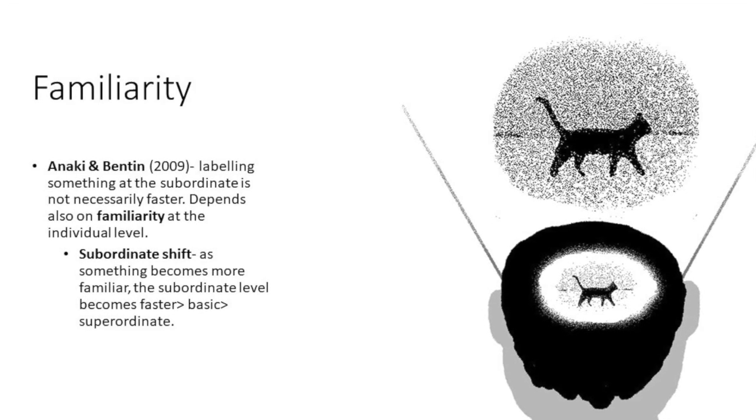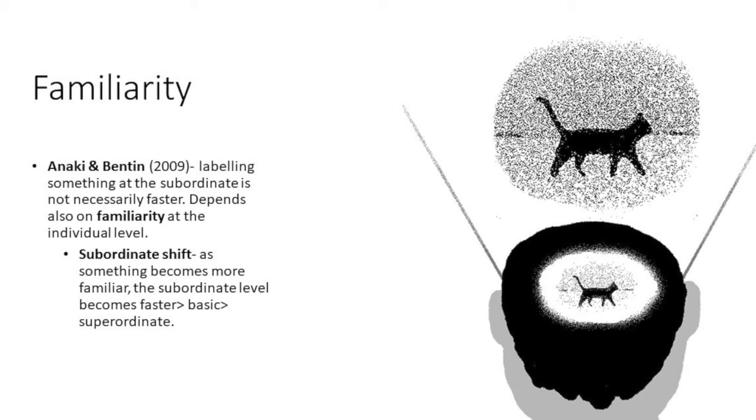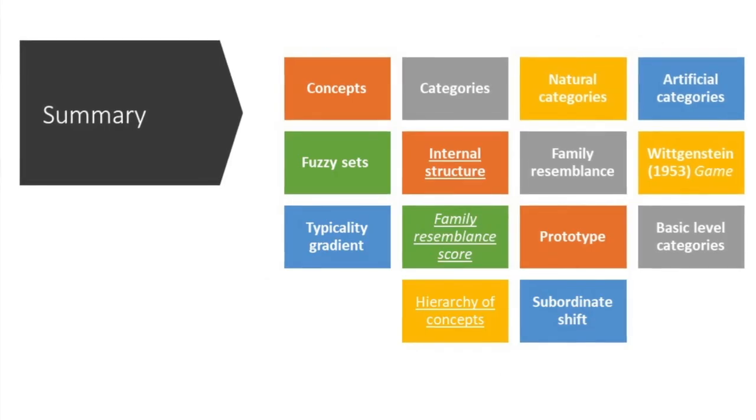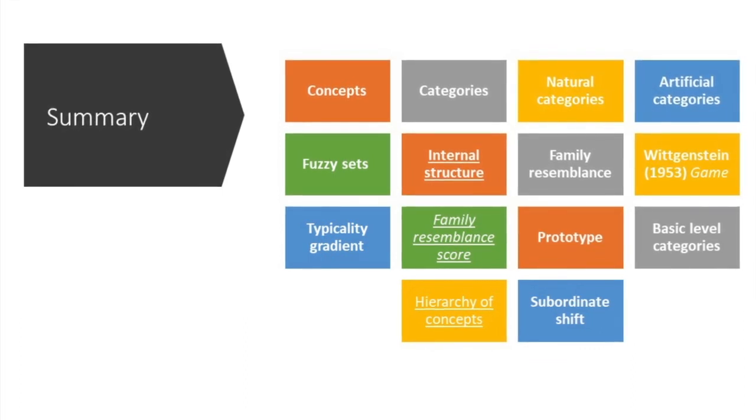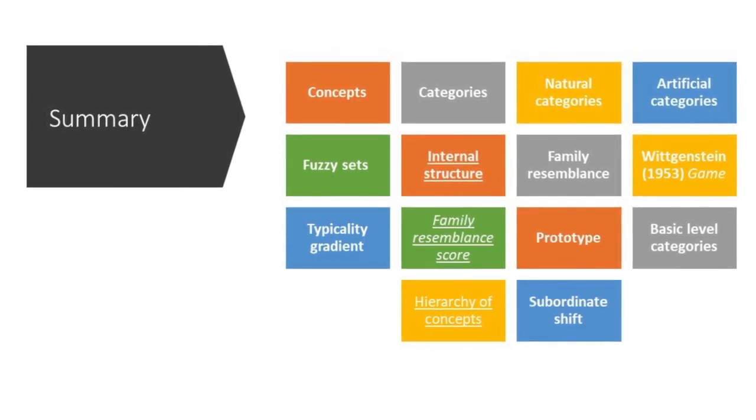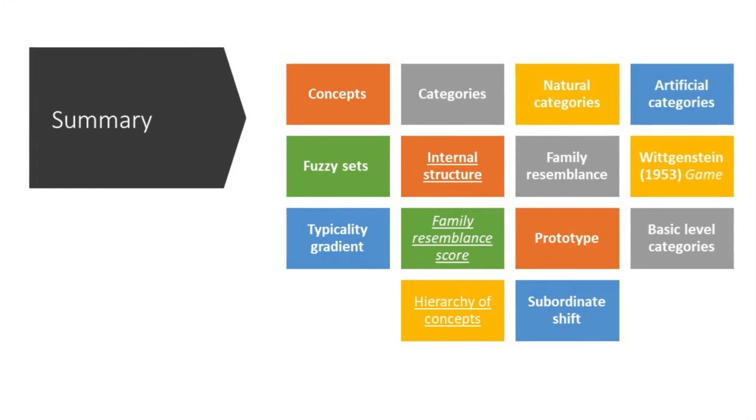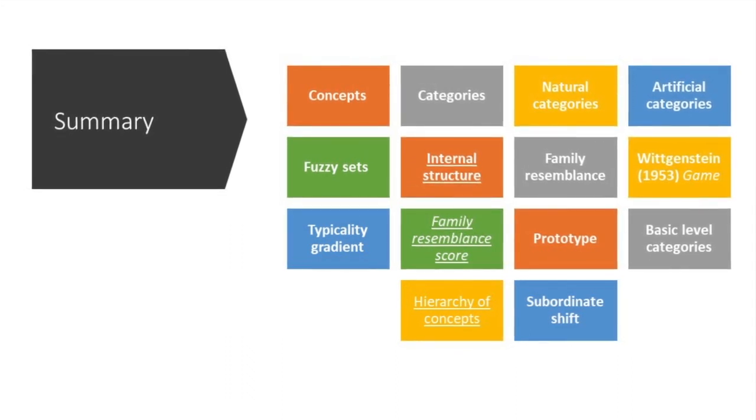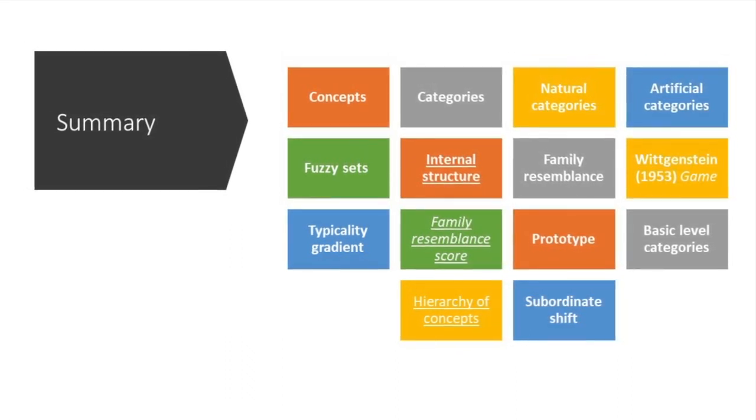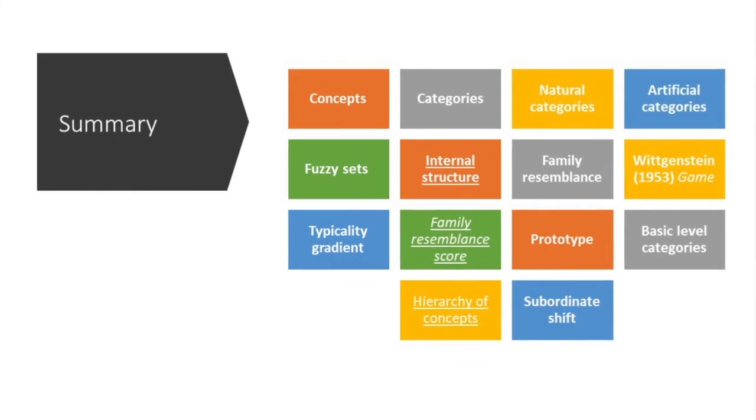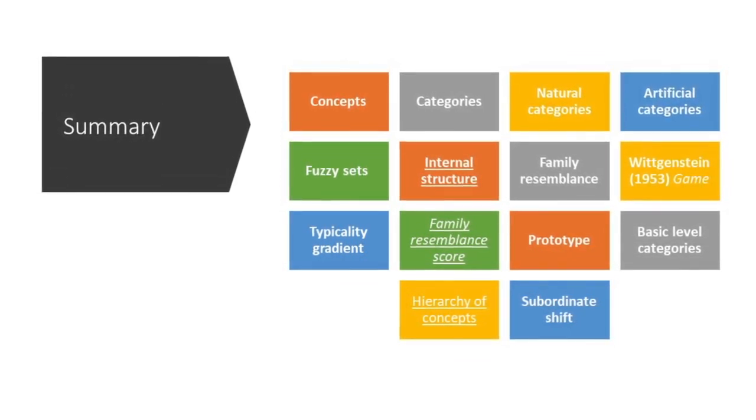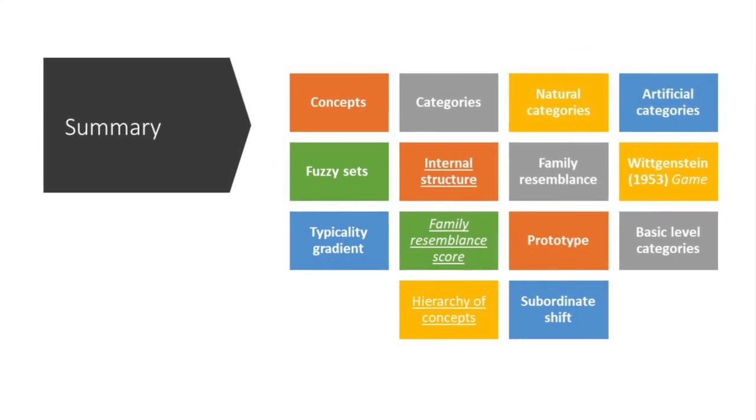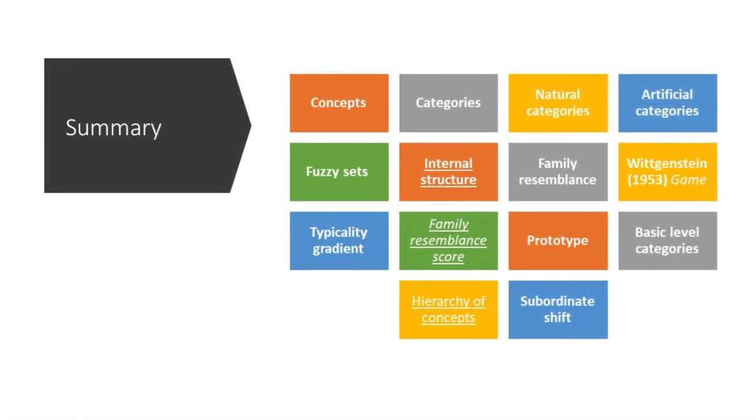In summary, we covered concepts, categories, natural categories, artificial categories, fuzzy sets, internal structures, family resemblance, Wittgenstein's 1953 game, typicality gradients, family resemblance scores, prototypes, basic level categories, hierarchy of concepts, and subordinate shift. Join me in the next video whereby I talk about reading and word recognition. Thanks for watching. Bye-bye.